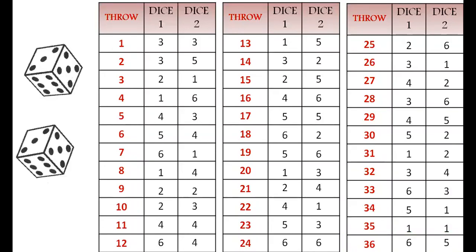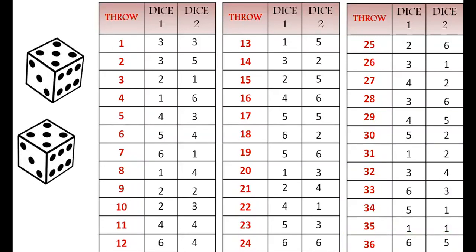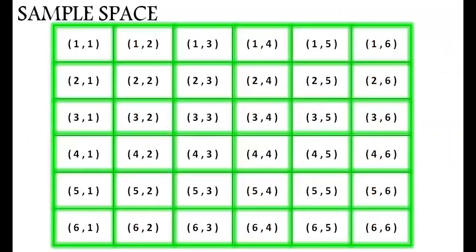We got 5, 5. This observation we have already noted at the 17th place, so we will not note down the same observation again. These are the unique outcomes when we throw a pair of dice. These total number of outcomes are called the sample space.